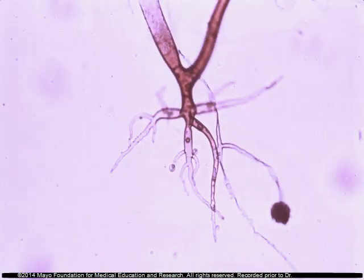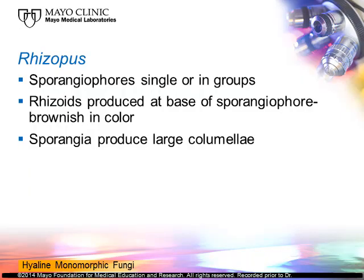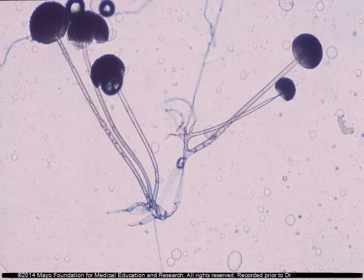The first organism we'll discuss is Rhizopus. Rhizopus has sporangiophores — long stalks — producing the sporangia in groups. The rhizoids are produced at the base of the sporangiophore: at the top you see the sporangium, you follow the stalk down, and at the bottom of that stalk you will see the rhizoids. When you see that, you know you're dealing with Rhizopus. The sporangia produce a columella that looks almost umbrella-shaped inside the sporangium. If you see a rhizoid at the base of the sporangiophore, you know it's Rhizopus.